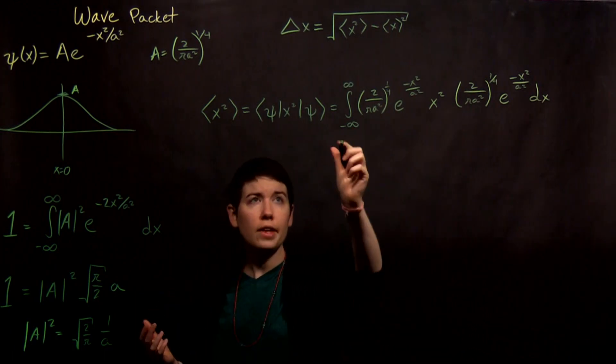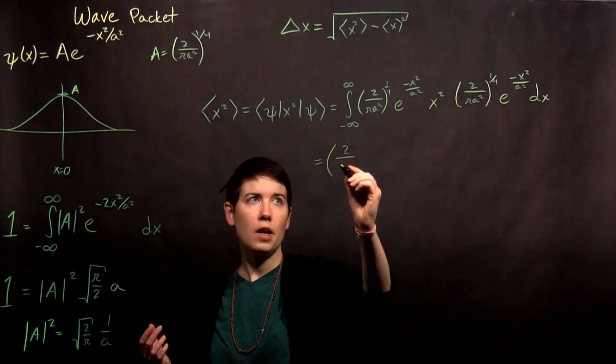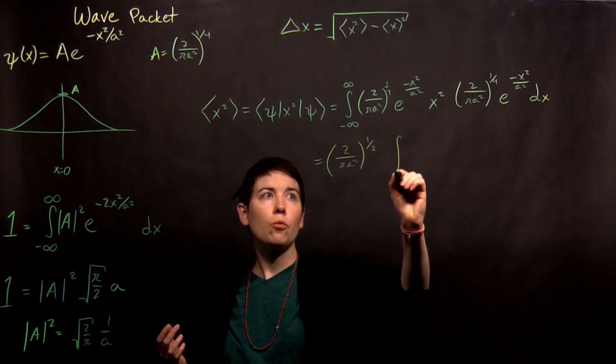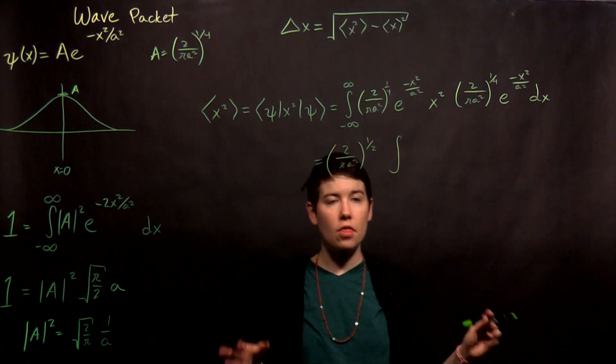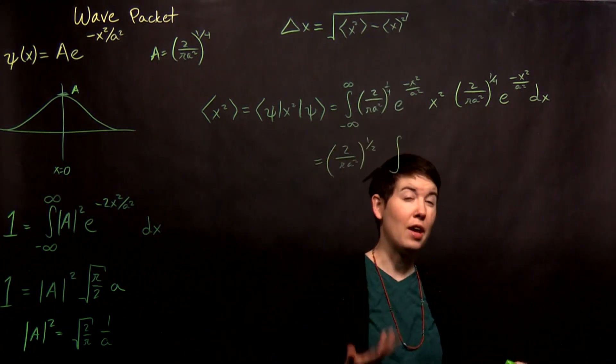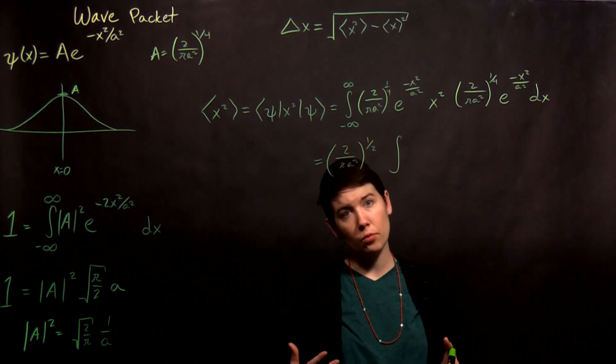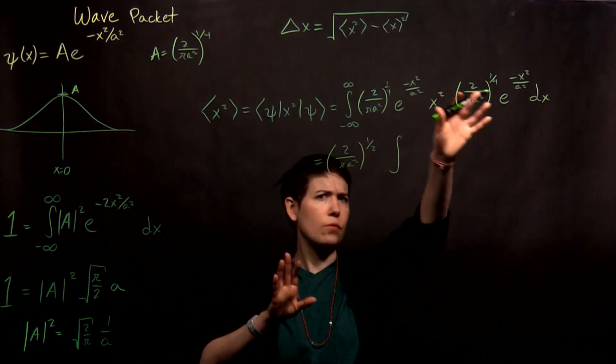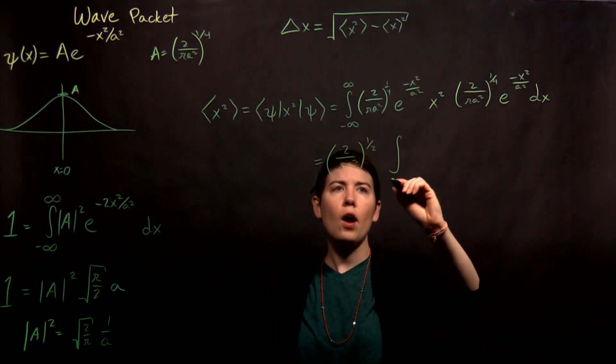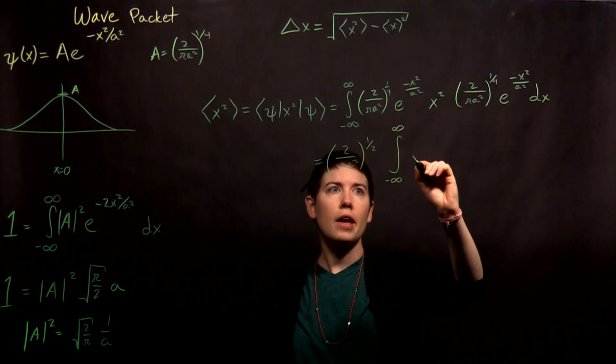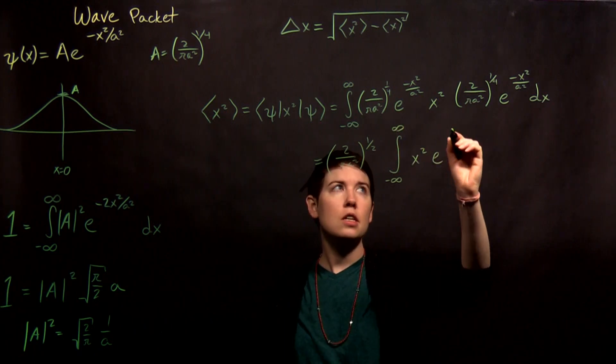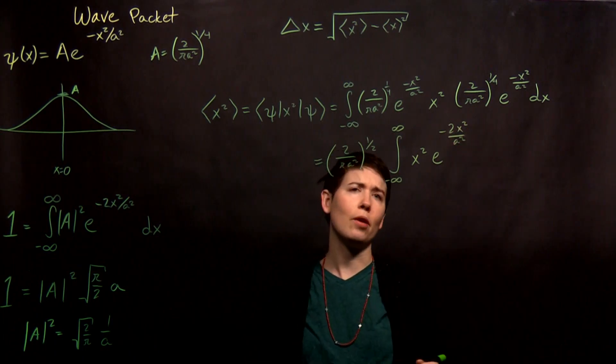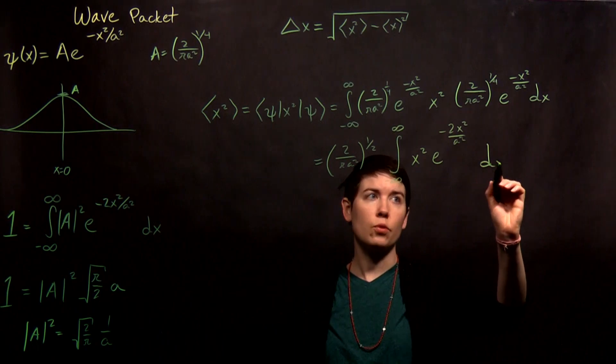So we can pull that term out. So you have 2 over pi a squared. Now it's just the one-half power. And now, remember that in this case, our operator is just the variable x. So if it was a derivative, we couldn't necessarily move things around, and that's what happens, for instance, for momentum. But in this case, we can actually move things around if we want to. So I can rewrite this as x squared e to the negative two x squared over a squared. Please remember how exponentials work when you combine them. And we're left with this.